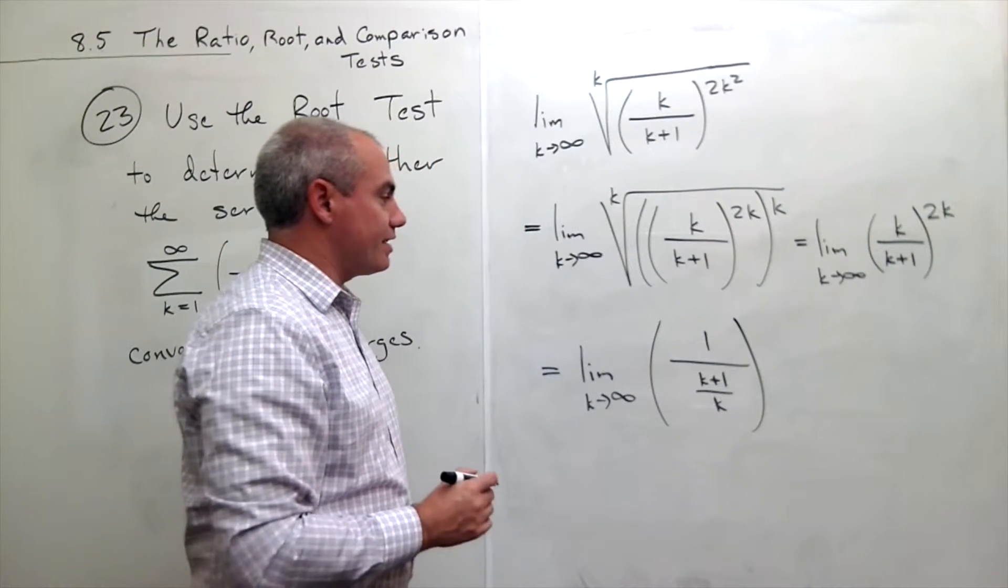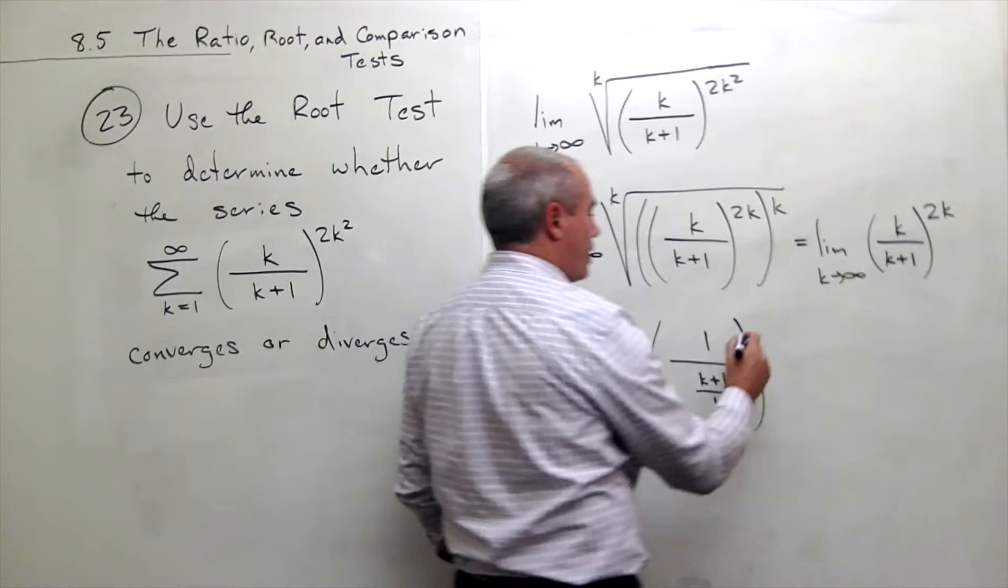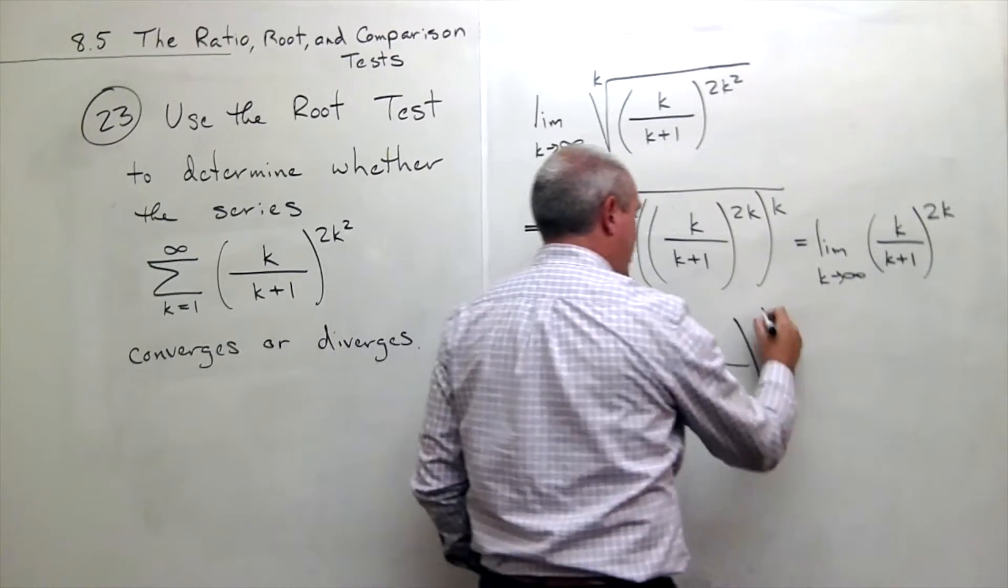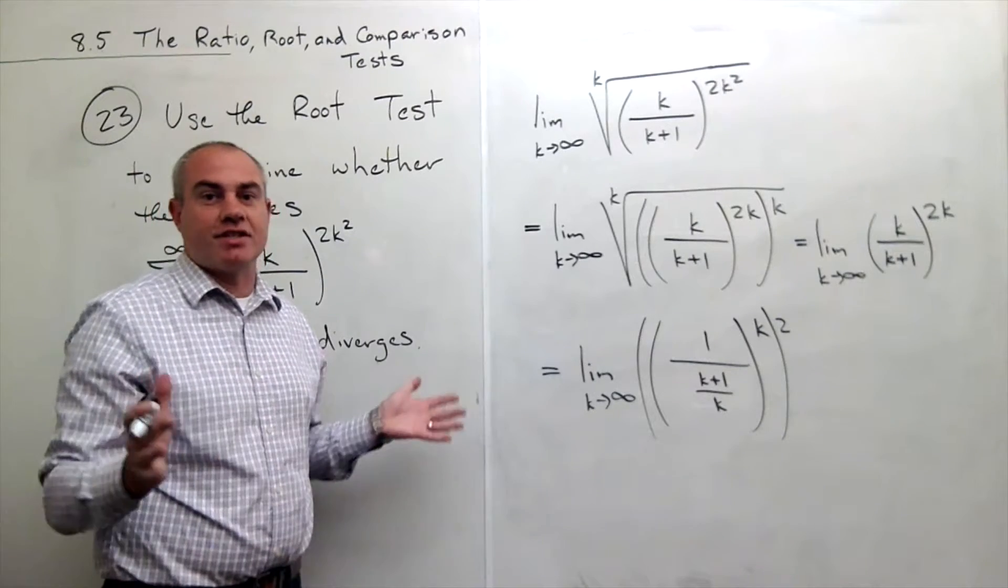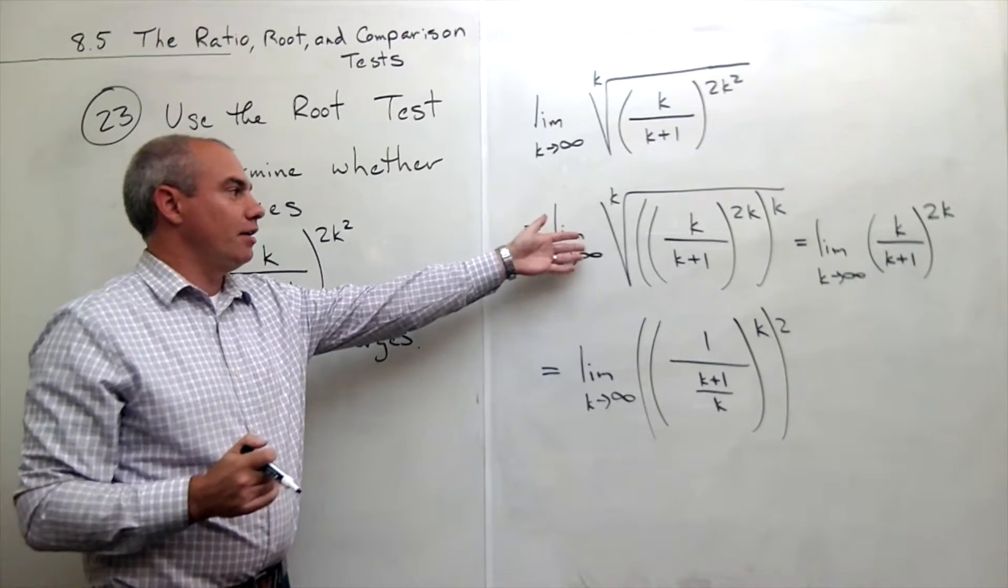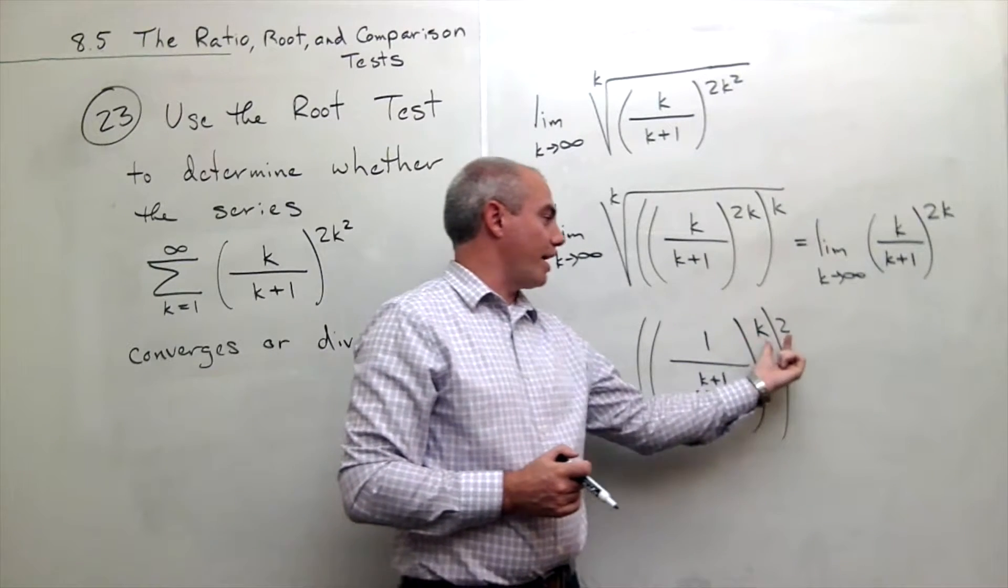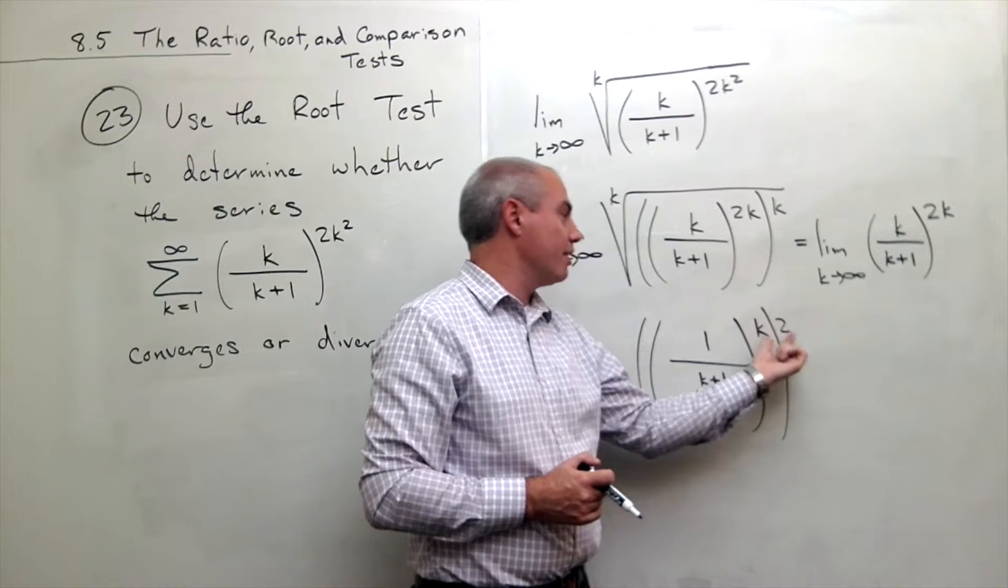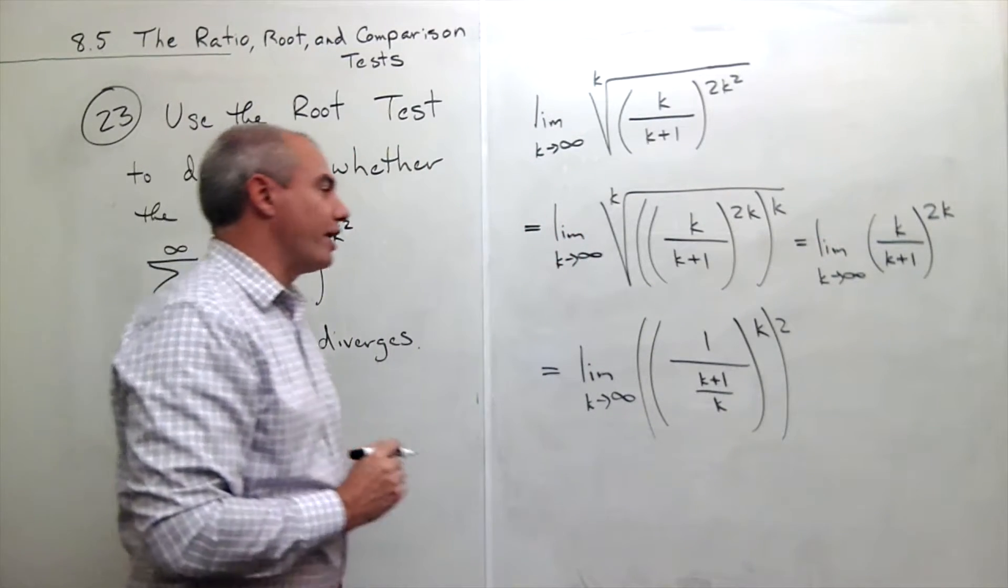But instead of raising this thing to the 2k power, what I want to do instead is let's raise it to the kth power and then square it. That's just the same thing I did up here to get rid of these k's. I realized that when I raise something to a power, raise to a power, I multiply the powers. So this is exactly the same as I had before. Let me rewrite again.